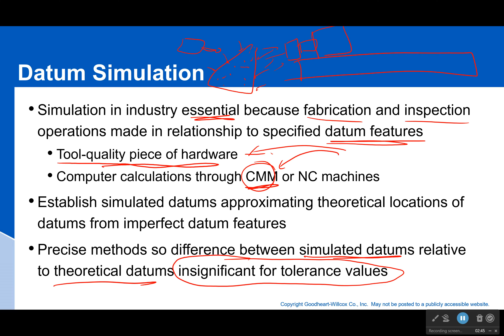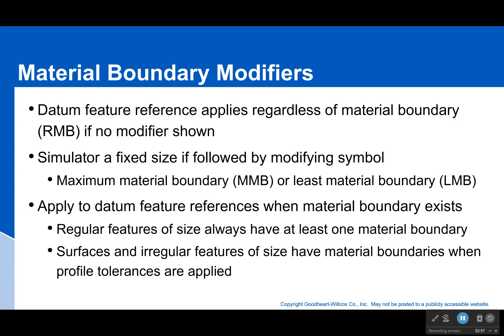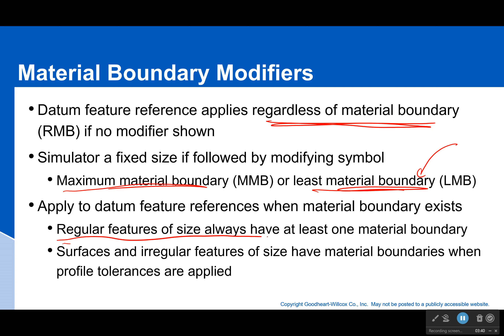One thing to note is that your material condition does matter. We have to set this material boundary modifier, which can change how the datums are referenced. Normally it's regardless of material boundary — you just go until you touch the surface and you're done. However, you can also keep your simulator at a fixed size or fixed location by applying either the max material boundary or the least material boundary, fixing your simulator to those locations. That gets a bit unusual since it's usually inside your part, which is a whole other topic. Regular features of size always have at least one material boundary.